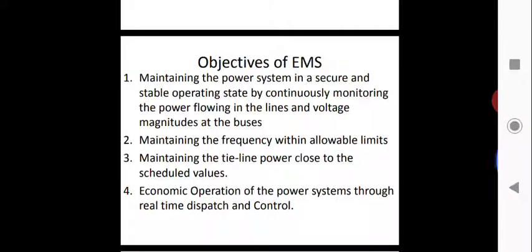The objectives of the energy management system are: first, maintaining the power system in a secure and stable operating state by continuously monitoring the power flowing in the lines and voltage magnitudes at the buses. Second, maintaining the frequency between allowable limits — plus or minus 5% or plus or minus 1% — where normally the frequency is transported at 49 to 50 Hz, ranging from 49.5 to 50 Hz.